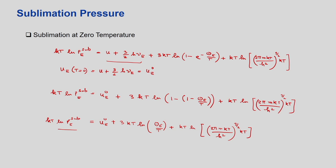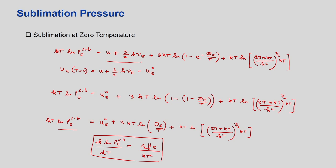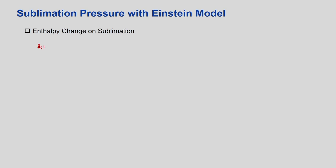We know from thermodynamics how sublimation pressure is related to enthalpy: if we take the logarithmic value of p and do a derivative with respect to temperature, this gives us the heat of sublimation. So ∂ln(p_E,sub)/∂T gives us H_E,sub divided by kT². We need to take this expression and take the derivative with respect to temperature to obtain the heat of sublimation.